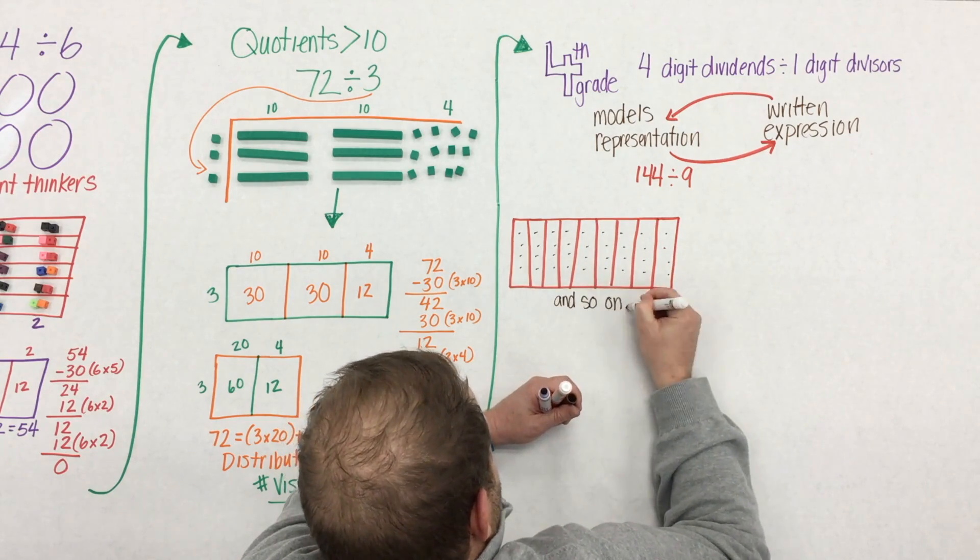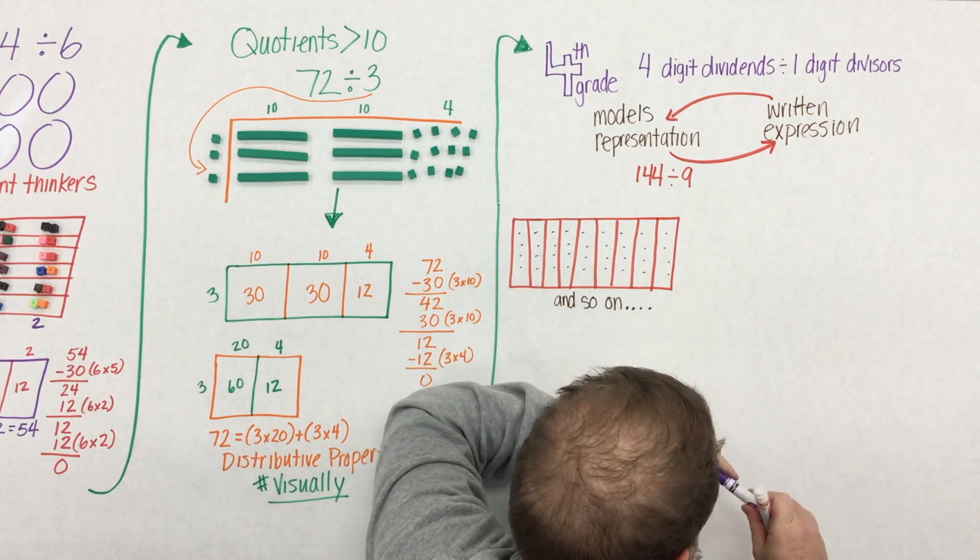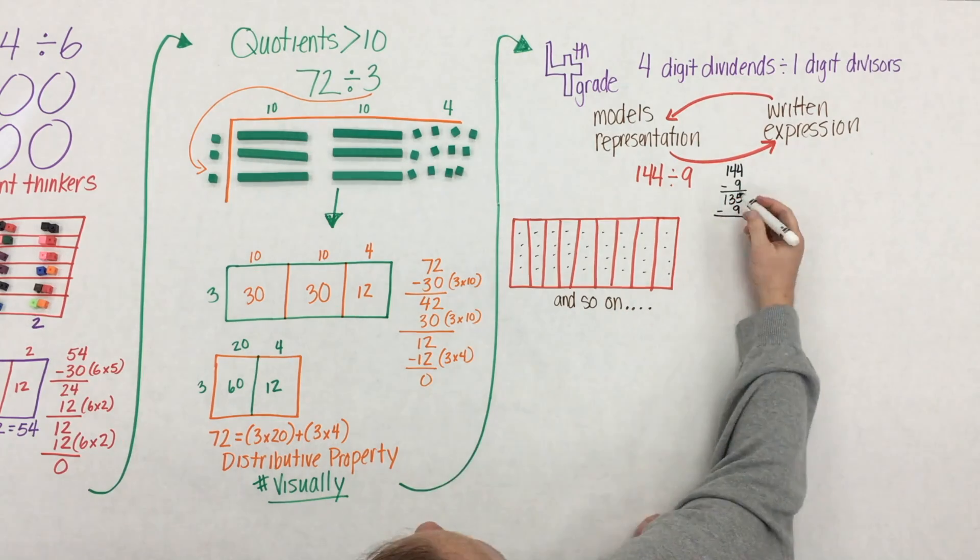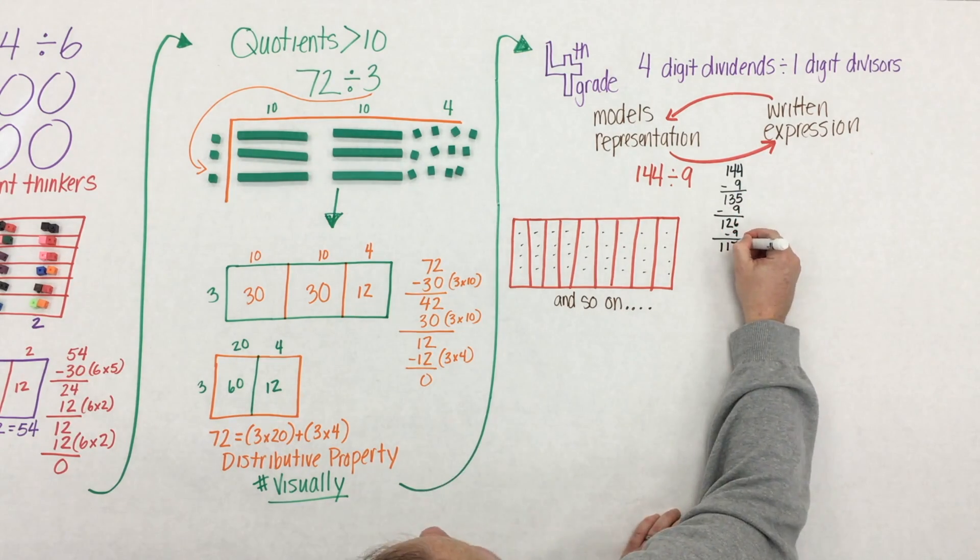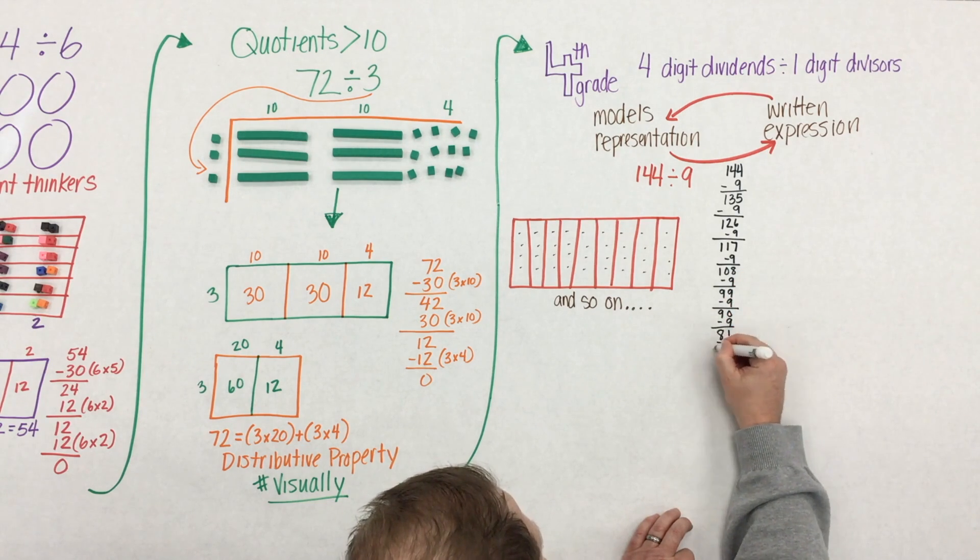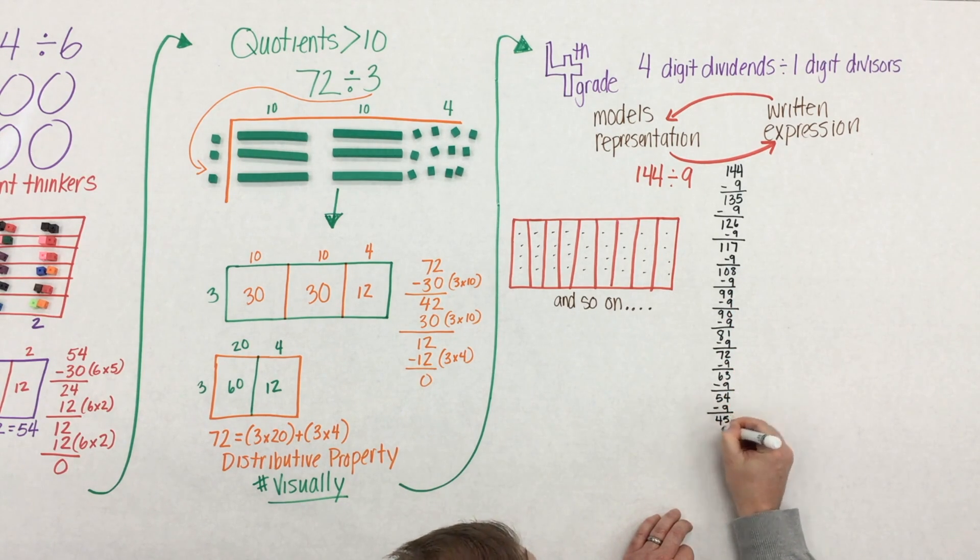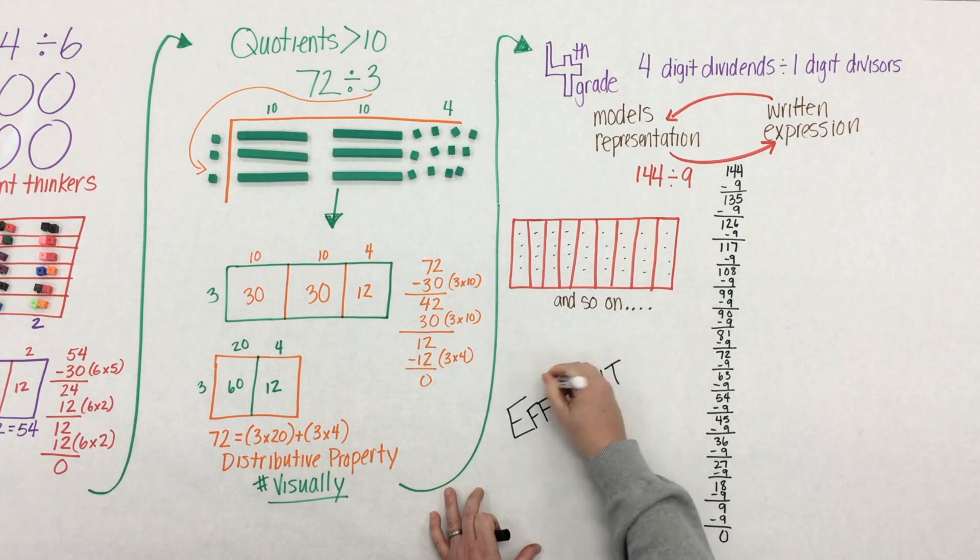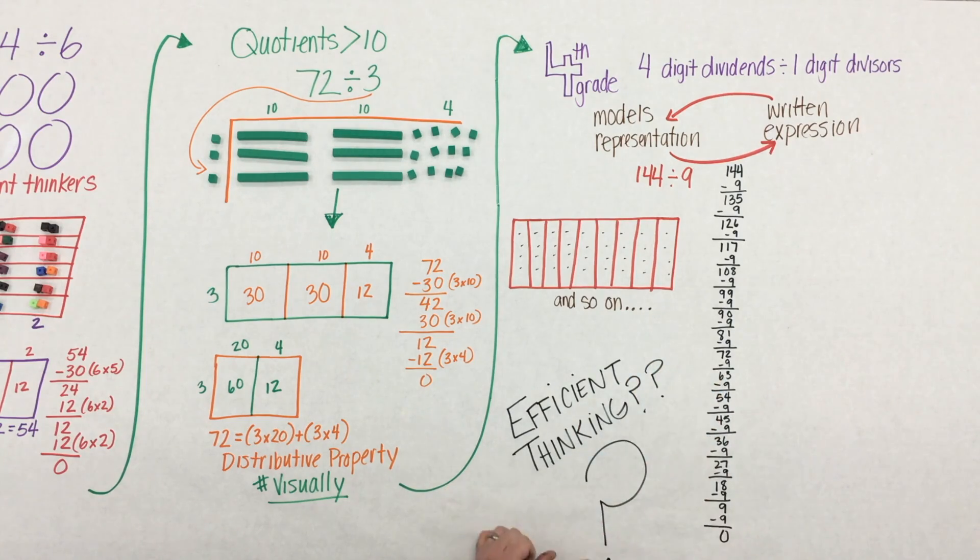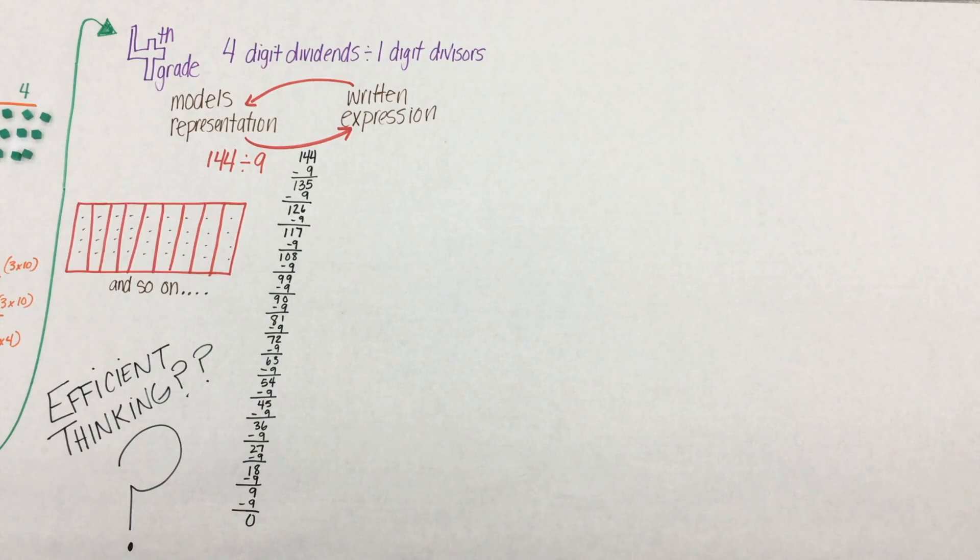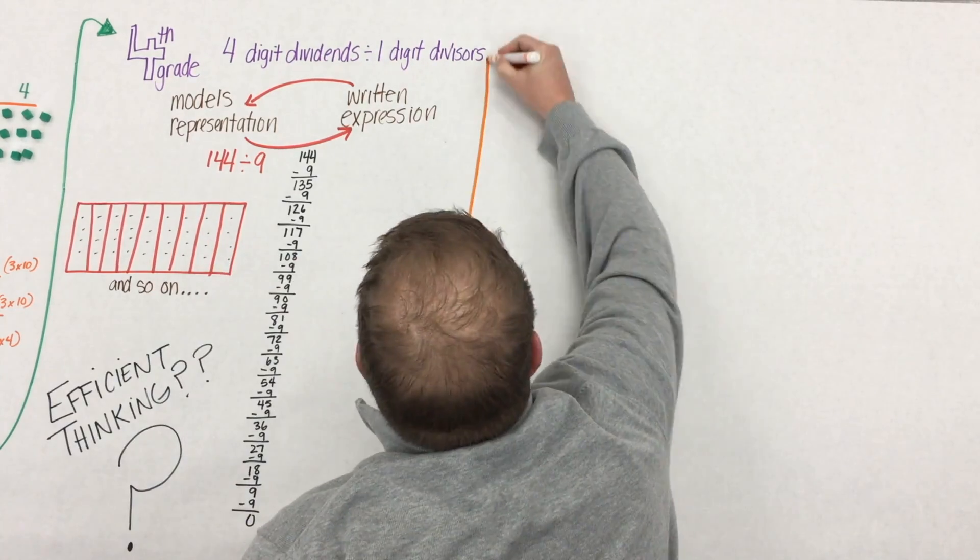Here we'll take 144 and divide it into nine groups, one into each group, and so on and so on. Again, that fair share model. But what does that model look like as a written expression? Well, here are the students repeatedly removing groups of nine from the 144. Now, is this efficient? No, not at all. But it's really important that students work through this step, and they realize what efficient and non-efficient thinking looks like.